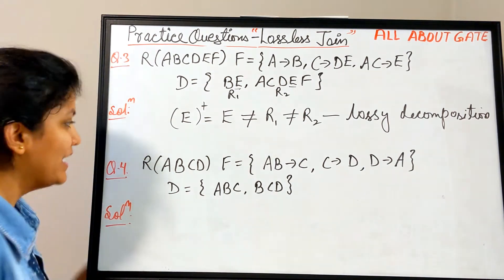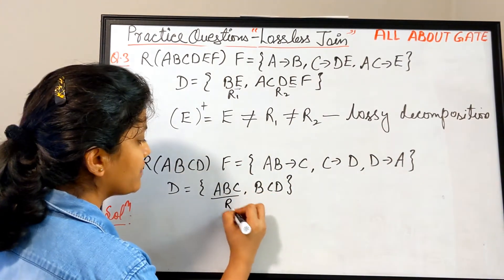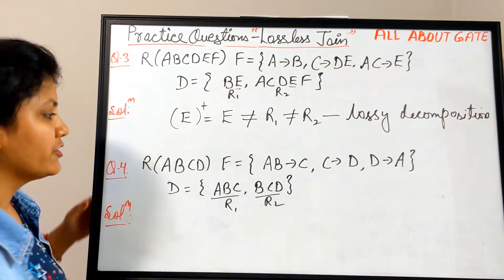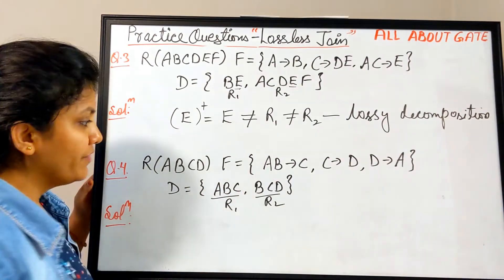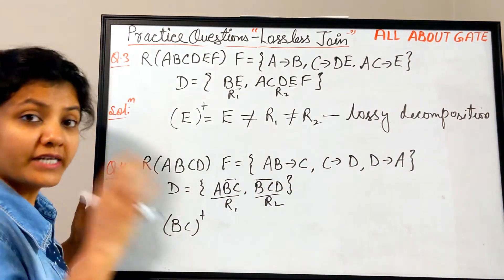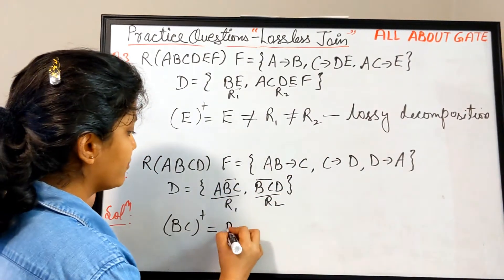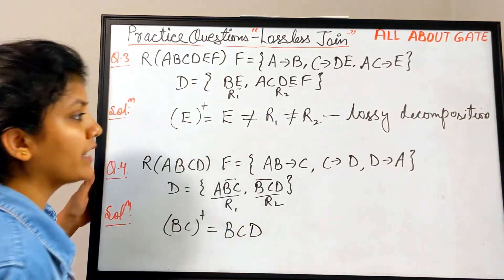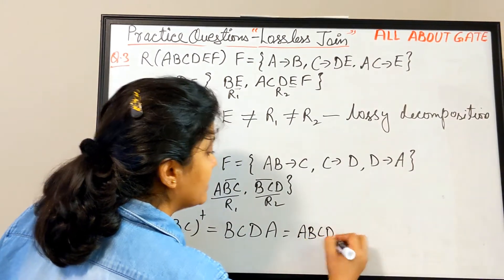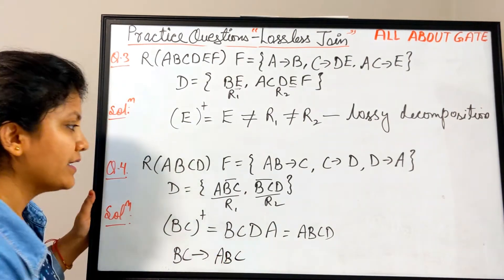Question four: relation R with attributes A, B, C, D and a given FD set. Let's call the decomposed relations R1 and R2. First, all attributes A, B, C, D are present. Second, the common attribute between the two is B, C. Now find the closure of BC: BC determines itself, then C→D, then D→A, so BC+ = {A, B, C, D}.